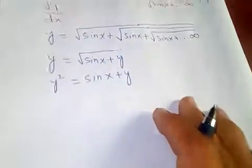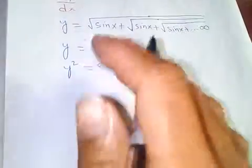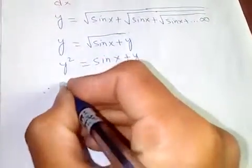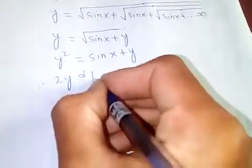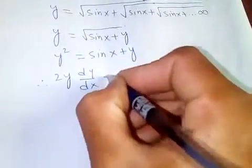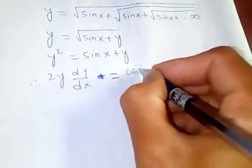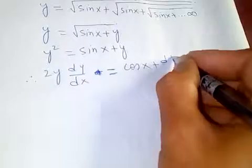Now let's take the derivative with respect to x. Applying the chain rule here, 2y dy/dx is equal to the derivative of sine x, which is cos x, plus dy/dx.